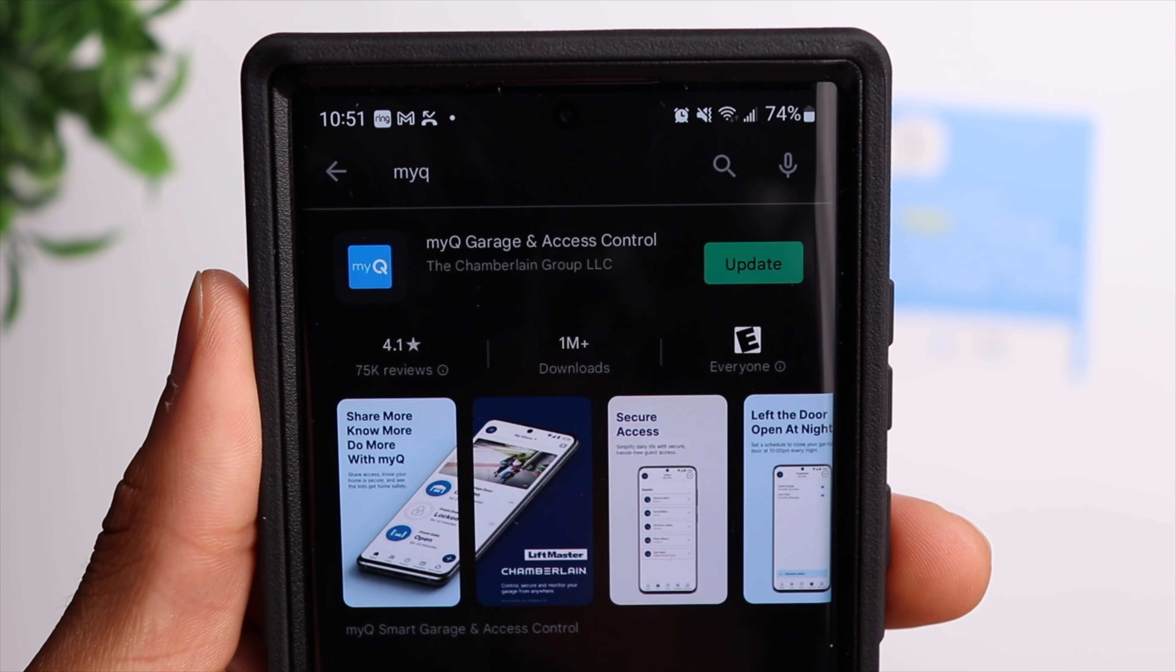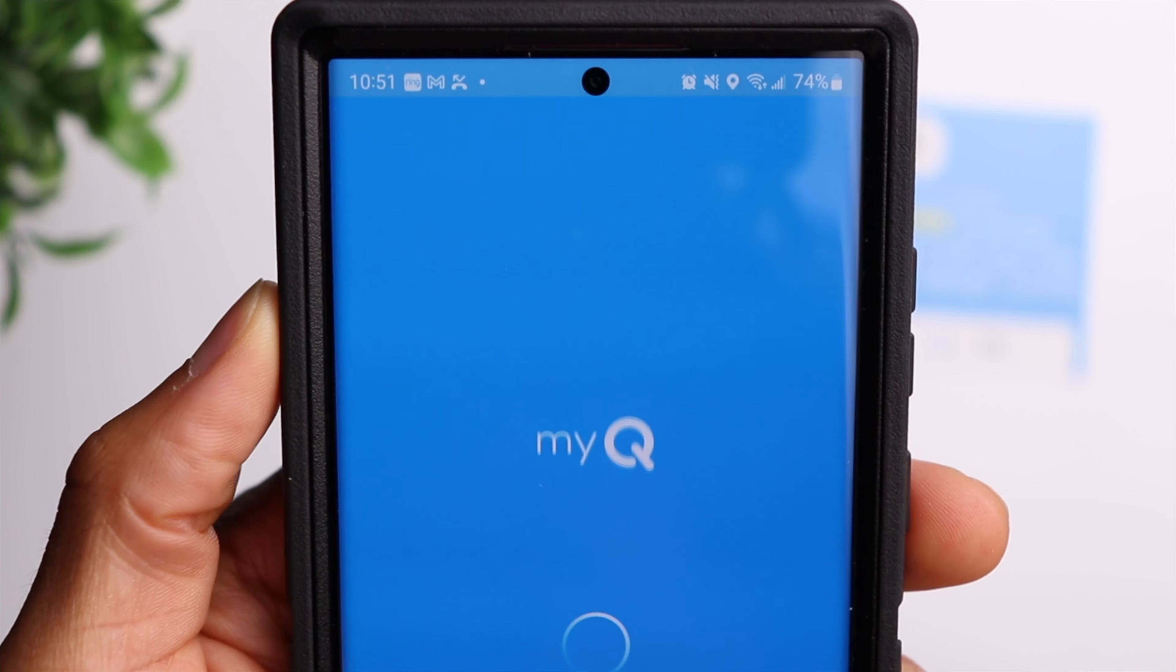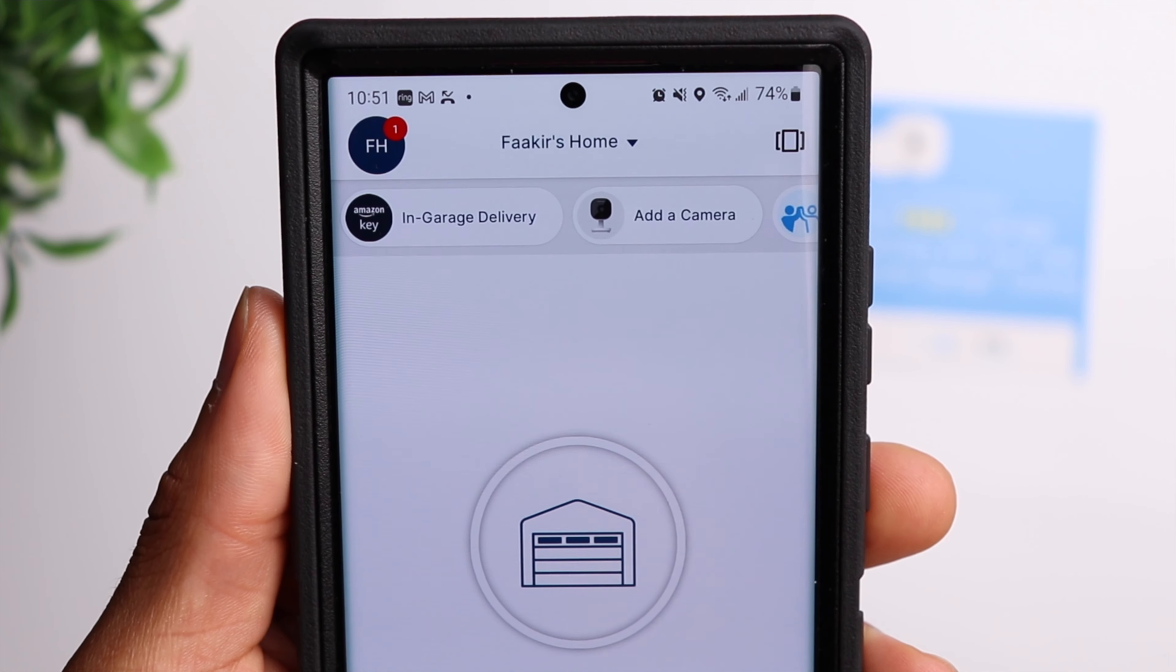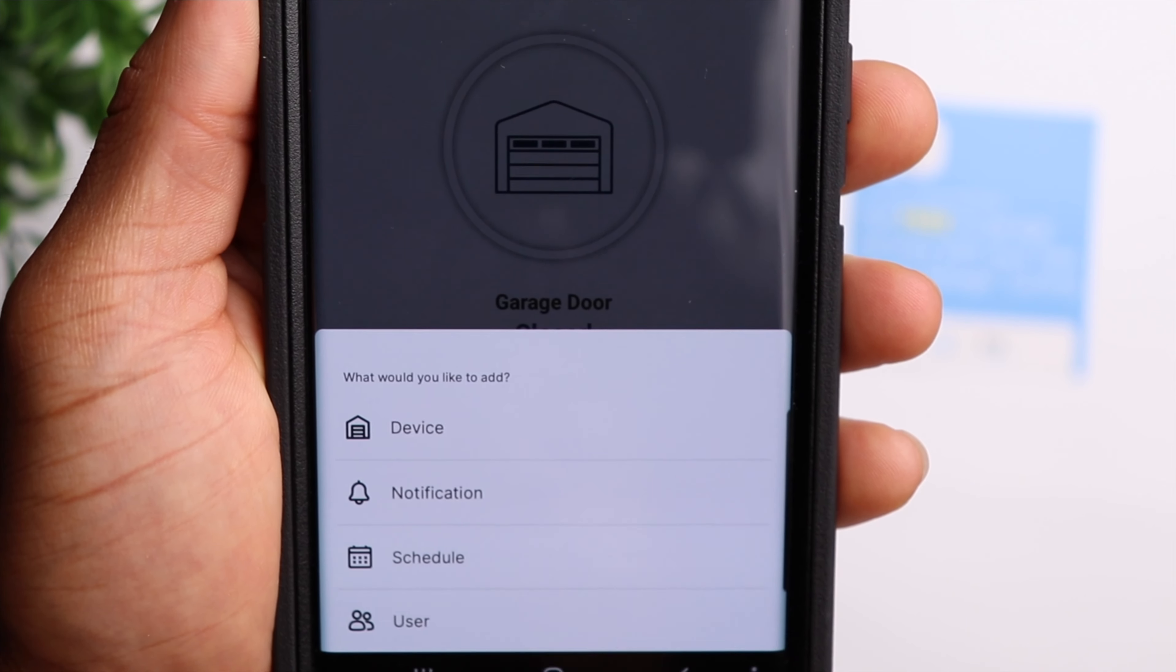All right, so the first thing we want to do is make sure we have the MyQ app installed on our phone. And then you want to follow the steps to create a login profile so that we can go ahead and add our device.